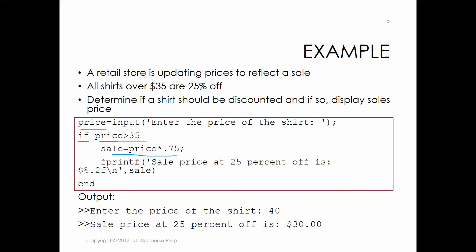Here is our calculation: the sale price is just going to be price times 0.75, because we said the sale would be 25% off. Then once we get the sale price calculated, we can do fprintf to display that sales price. It'll say 'sales price at 25% off is $' and then use '%.2f' — the .2 means two digits past the decimal place — and then '\n' so it moves the cursor to the next line. Then you have the end statement. Notice that this is all indented inside the if statement.